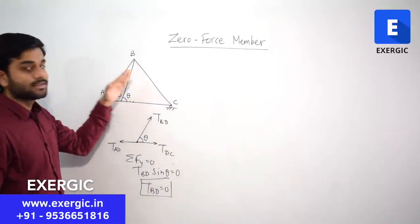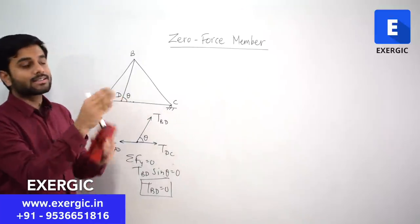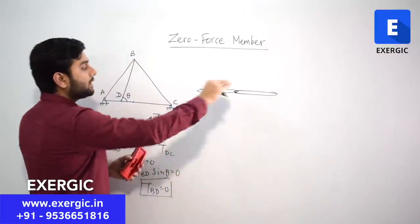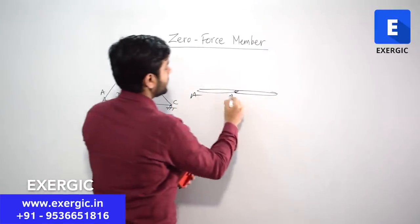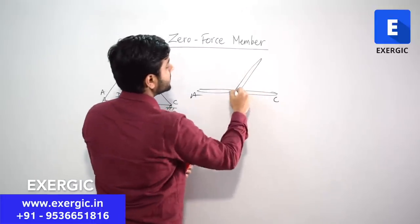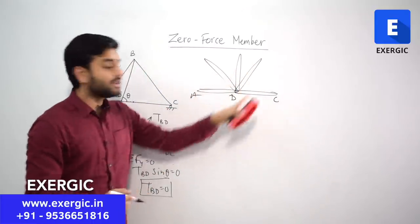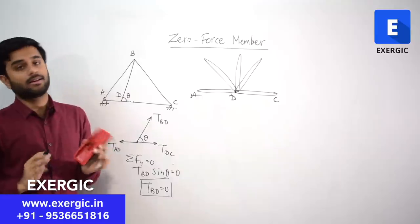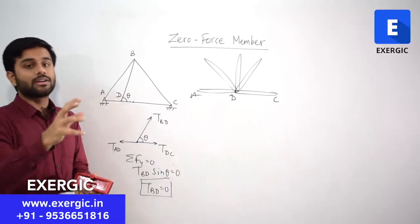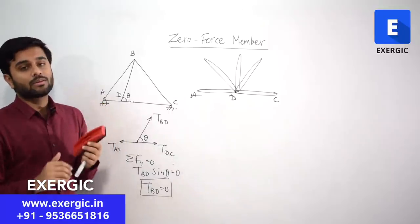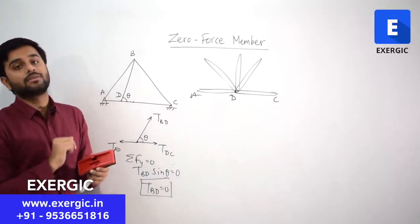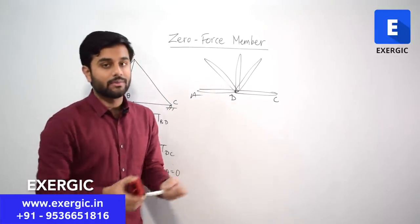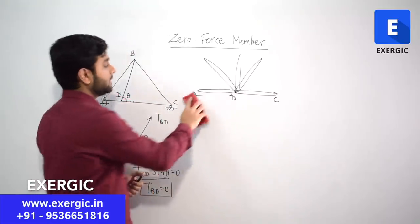Irrespective of what angle BD makes, if any member connects to two collinear members like AD and DC, it will always be a zero force member if no external force is acting at that point. Many students who go through the concept of zero force members superficially skip this — that it can be connected at some angle as well. So when such numericals are framed specifically asking for zero force members, they run into trouble.